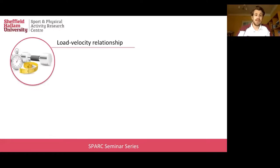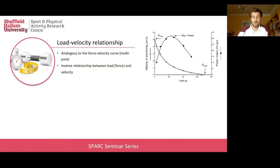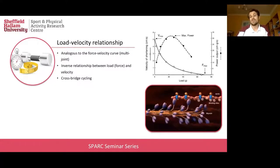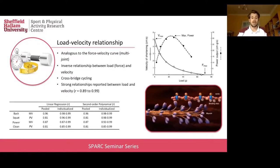The load velocity profile is based on the load-velocity relationship, which is analogous to the force-velocity curve. This suggests that as the load or force requirements of active muscle increase, the velocity of muscle shortening must decrease — giving us an inverse relationship between load and velocity. The main reason for this is likely cross-bridge cycling, the underpinning physiological mechanism of muscle force production. As the velocity of shortening increases, the time available for the contractile proteins actin and myosin to bind reduces, decreasing the force that can be developed.